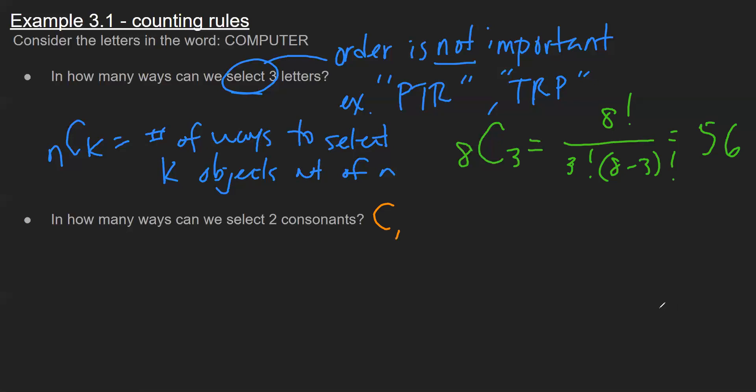So that's C, M, P, T, and R. So to guarantee that I don't accidentally pick any vowels, I want to make sure that this is my total pool of objects. And again, the word here is select. So I don't care about the order. So ultimately, I've got five total objects I want to choose from these five consonants. And then I want to select two of them.